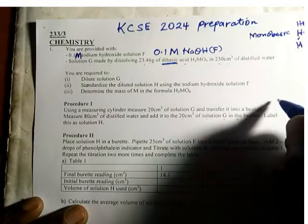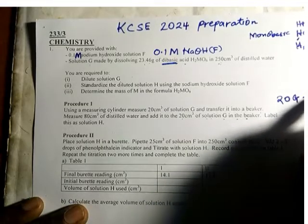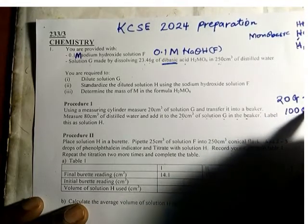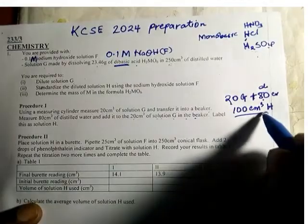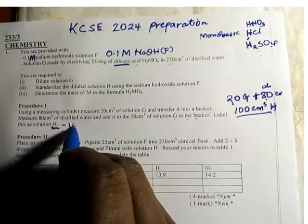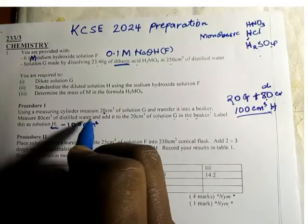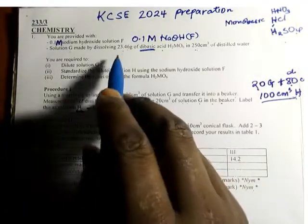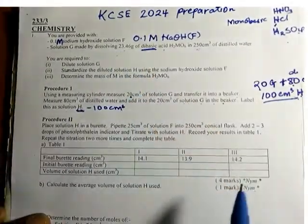Understanding the procedure is very important. We are taking 20 cm³ of solution G, adding 80 cm³ of distilled water, and forming 100 cm³ of solution H, because 20 plus 80 equals 100. So solution H has a total volume of 100 cm³, and H is simply solution G — the dibasic acid — but diluted.